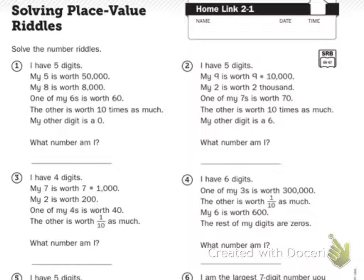Your Home Link is having you use both. So it says solve the number riddles. Number one, I have five digits. So my first thing I'm going to do is I'm going to draw five lines because I have five digits.